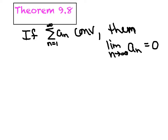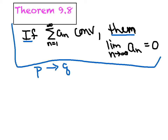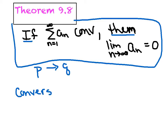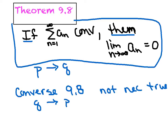I want to jog your memory back to geometry where we did logic and if-then statements. Theorem 9.8 creates an if-then: if p then q. I should mention this theorem is 100% true. However, the converse of theorem 9.8 is not necessarily true — it might be true, it might not be. The converse says if q then p, so let's think about that sentence.